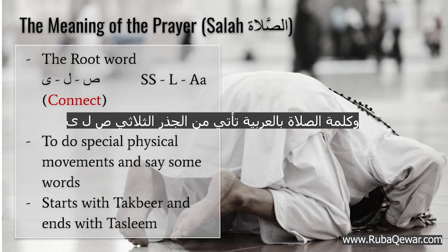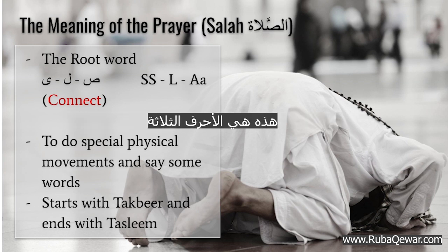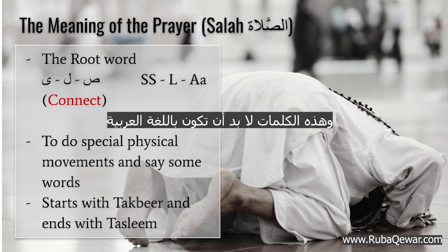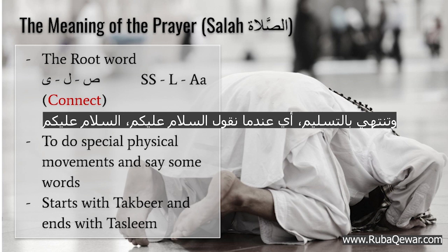Salah — the root word in Arabic comes from Saad, Lam, Aleph. These are the three letters, and it means to do special physical movements and say some words. These words have to be in Arabic. It starts with Takbir, when we say Allahu Akbar, and it ends with Taslim.